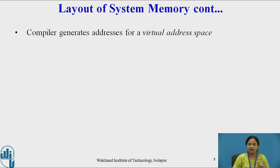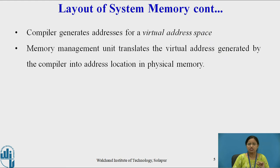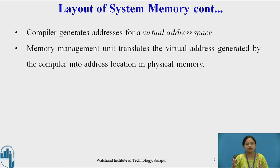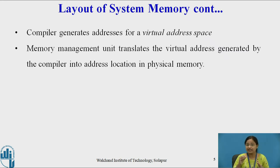That is why the compiler needs to generate a virtual address space, and this virtual address space is nothing but a region for the process. The memory management unit translates this virtual address generated by the compiler into an address location in physical memory. The address generated by the compiler is a logical or virtual address, while the address in physical memory is a physical address located in main memory. The virtual address is generated at the time of compilation of a program.